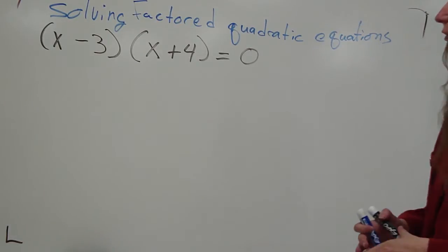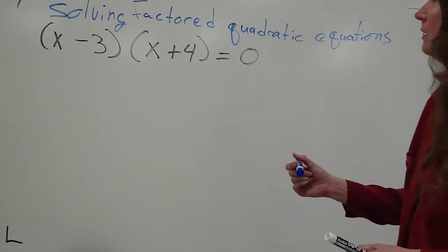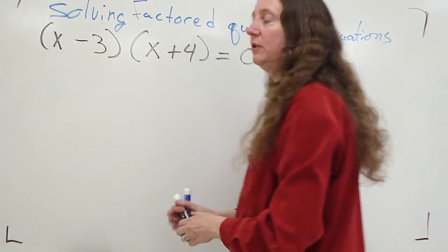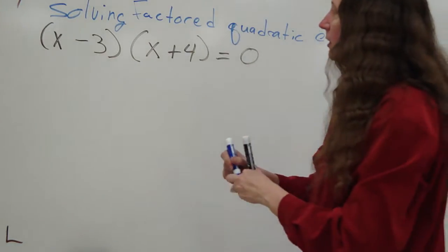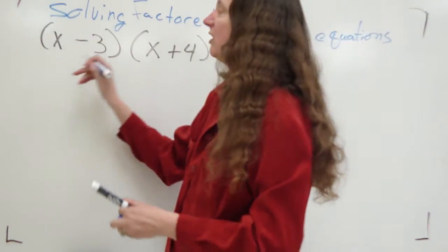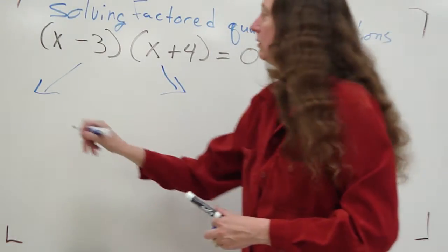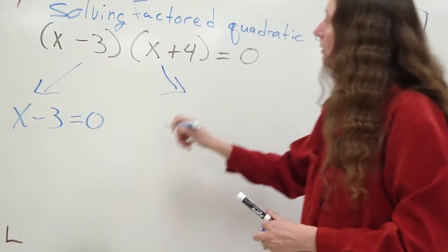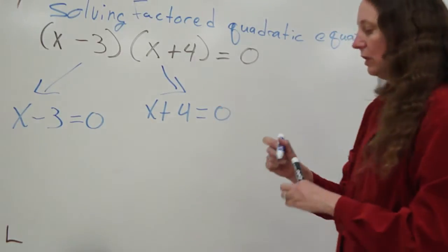Here's a real quick example of how to solve a factored equation. It's already been factored — we have one set of parentheses times another set of parentheses equals zero. The first thing you're going to do is break this up into two parts: x minus three equals zero, and x plus four equals zero.